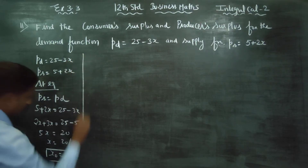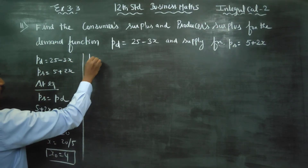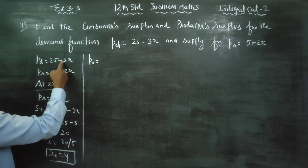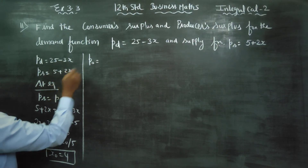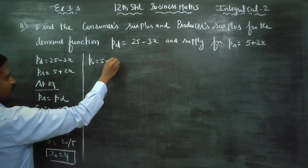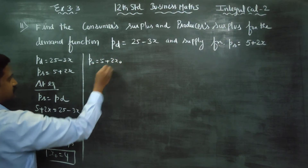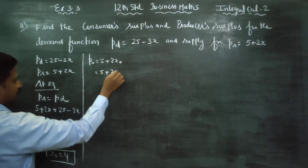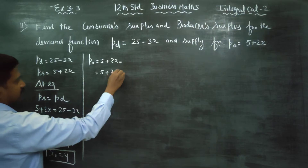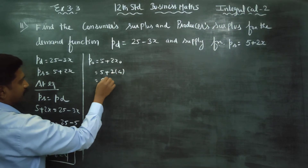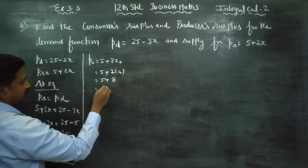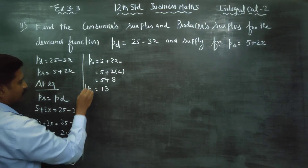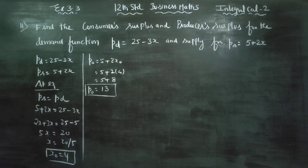After finding X0, we find P0. We substitute X0 into the supply function: 5 plus 2 into X0, where X0 equals 4. So 5 plus 2 into 4 gives 5 plus 8, and 5 plus 8 equals 13. So P0 is 13. X0 is ready and P0 is ready.